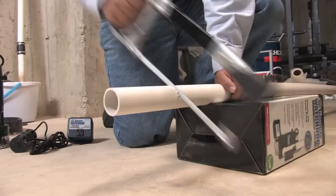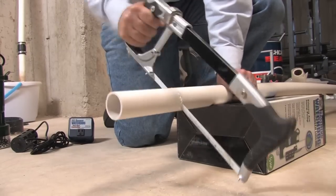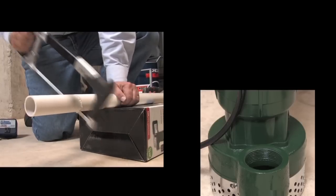Cut a piece of one and one-half inch PVC pipe that will reach from the pump outlet to the check valve.